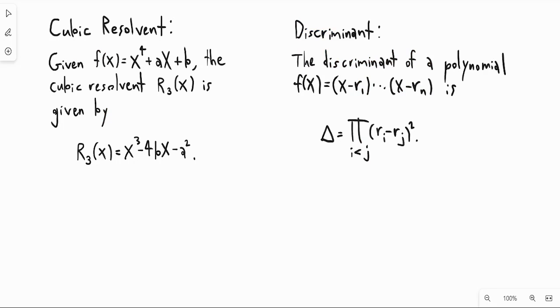Okay, so on this page, I wrote two of the more important tools that you need to find Galois groups for polynomials like this. The first one is called the cubic resolvent, and this is assuming that you start with a quartic polynomial. So if you have a quartic x^4 + ax + b, so if it's in this specific form, then the cubic resolvent is defined to be R_3(x), and it's equal to this polynomial.